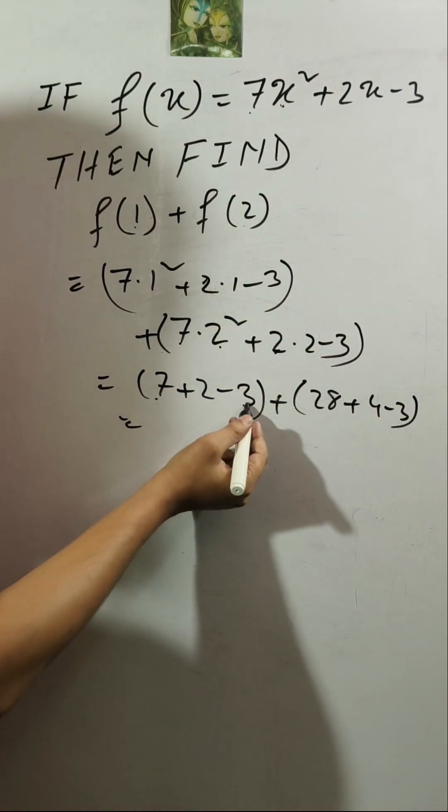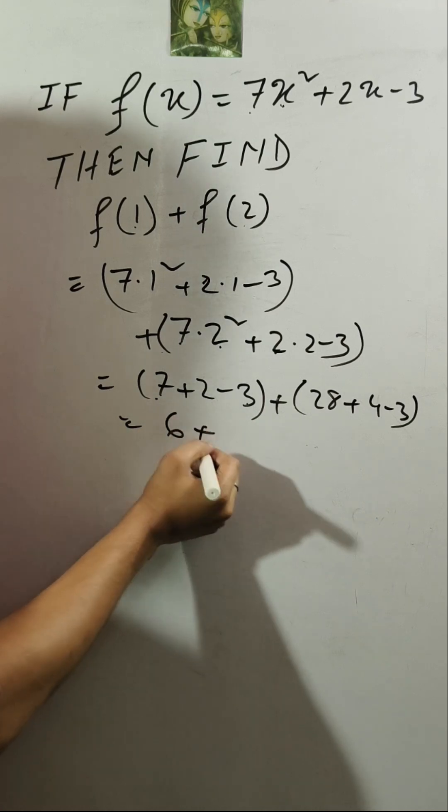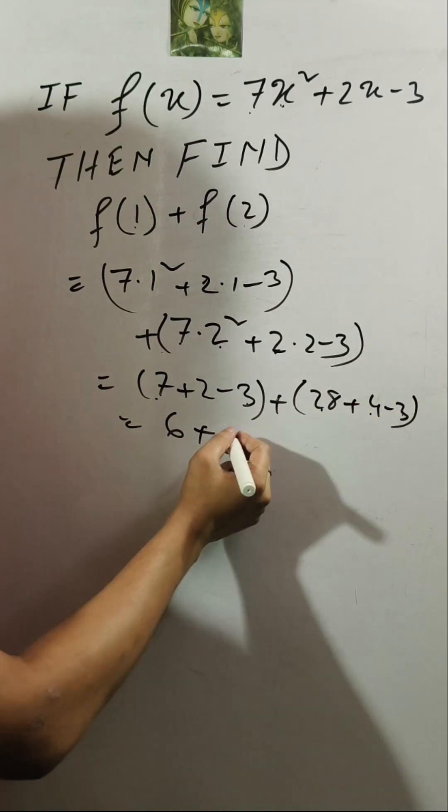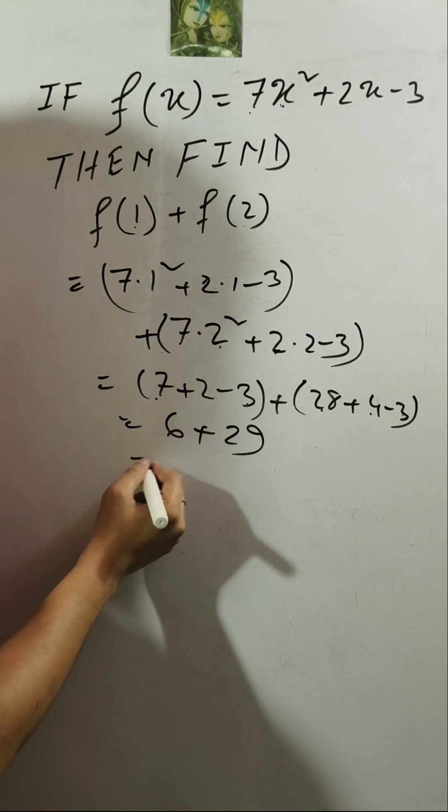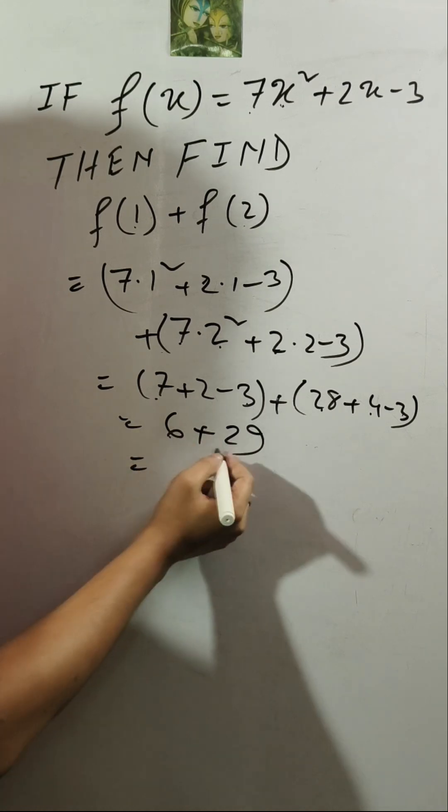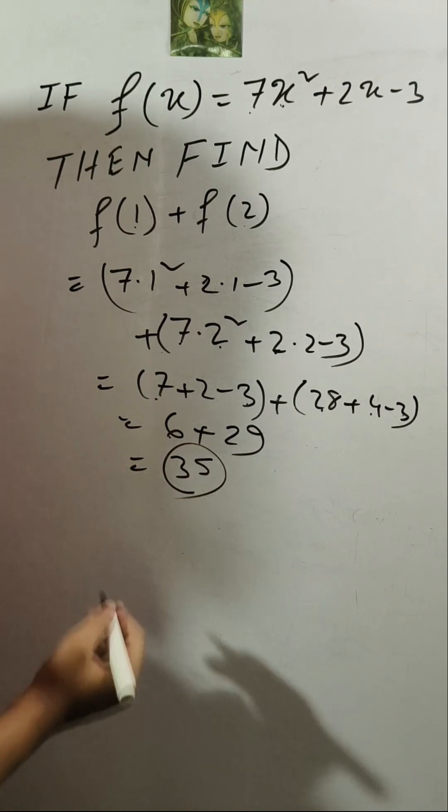7 plus 2 is 9 minus 3 is 6, plus 28 plus 4 is 32 minus 3 is 29, which is equal to 6 plus 29 is 35. Our answer is 35.